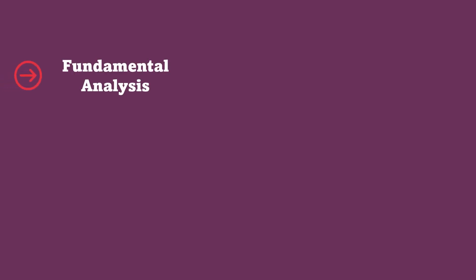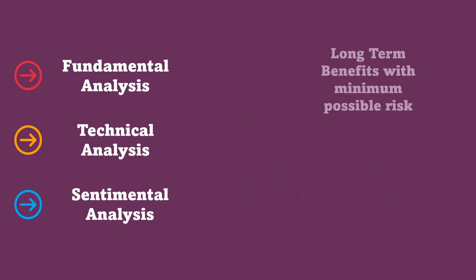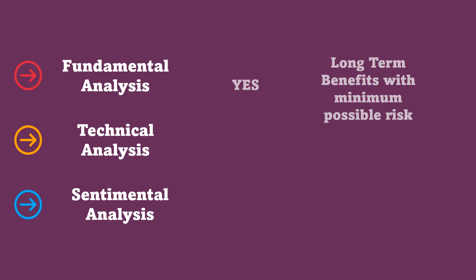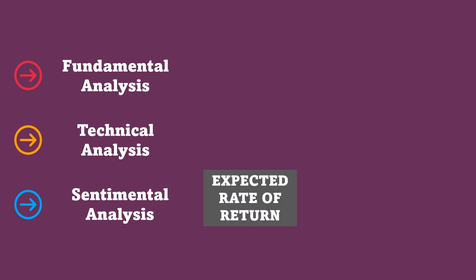So how does one decide which analysis to use while investing in the stock market? Investors can use these categories of analysis either alone or in combination of two or all three of them, based on their investment vision. For example, someone looking at long-term benefits with minimum possible risk would use fundamental analysis alone, and someone who is looking at the stock market as a primary source of income would probably use technical analysis alone. One can choose their combination based on their expected rate of return and risk exposure. In the coming videos, we will be discussing the various possible combinations of these strategies.